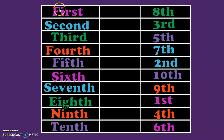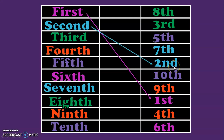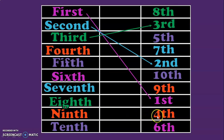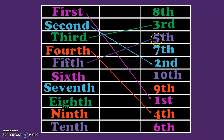Let us begin. First — F-I-R-S-T — the numeral corresponding to first is 1 followed by S-T. The next number name is second — S-E-C-O-N-D — the numeral corresponding to second is 2 followed by N-D. Third — T-H-I-R-D — the numeral corresponding to third is 3 followed by R-D. The next number name is fourth — F-O-U-R-T-H — and the numeral corresponding to fourth is 4 followed by T-H. The next number name is fifth — F-I-F-T-H — and the numeral corresponding to this is 5 followed by T-H.